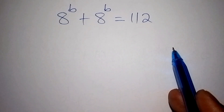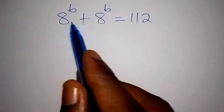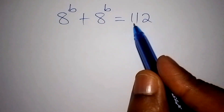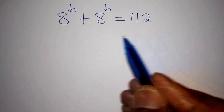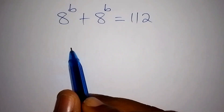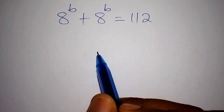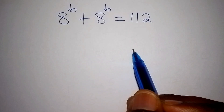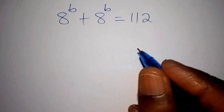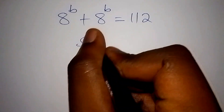Can you solve this math problem? We have a to the power of b plus a to the power of b equals 112. Watch it to the end because the answer shall surprise you. It seems easy but let us now try it and see. Let us now start with the solution.